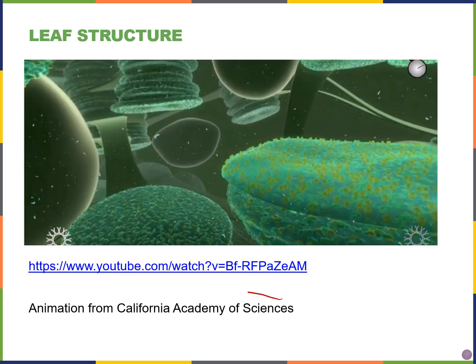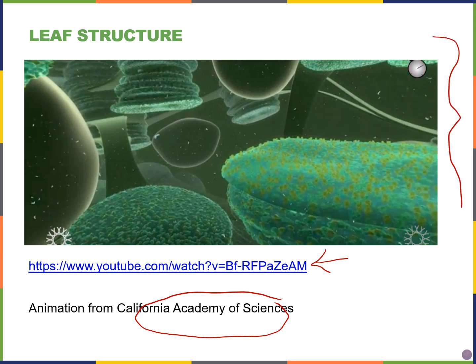The California Academy of Sciences has created a really nice animation. If you go to the PDF of our slides and paste the link into your browser, it shows a nice animation taking us through the structure of the leaf, into the stomata, and into the chloroplasts of these plants where photosynthesis takes place.